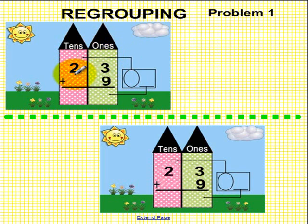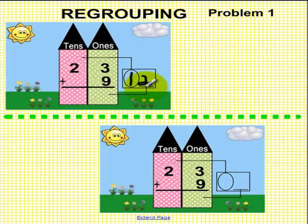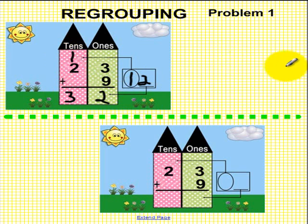We have two tens — that's twenty — and one, two, three ones — so twenty-three plus nine. Nine plus three is twelve, so out of twelve we put a ten in the balloon and place the two on the elevator. The two goes down and over to the left, and the balloon goes up all the way to the left. Now we have one, two, three tens — thirty. So your answer should be thirty-two. Hopefully yours matches ours!